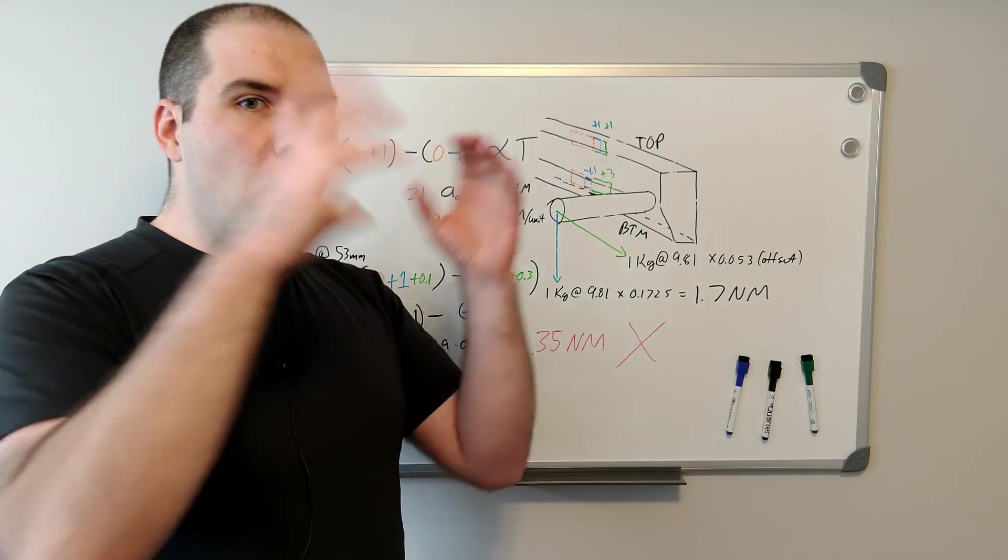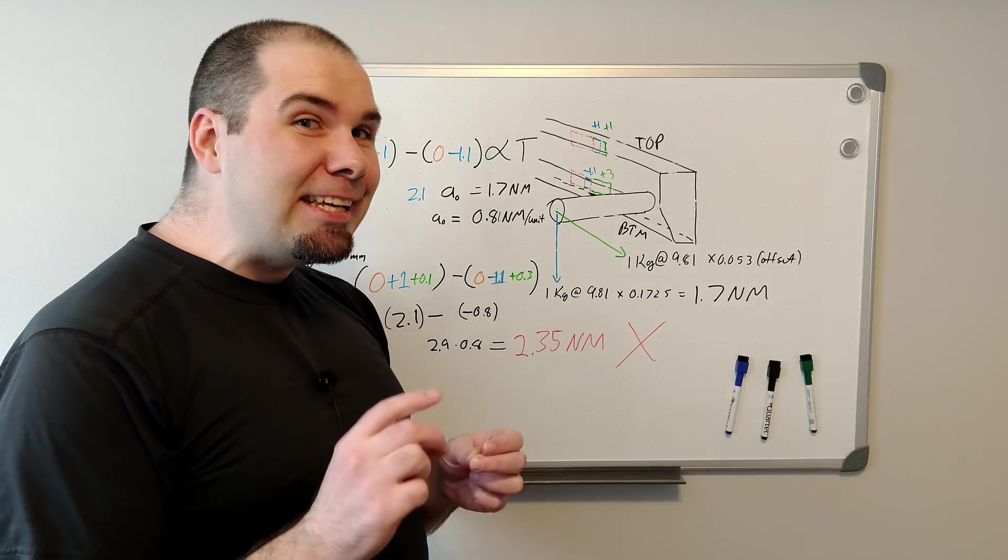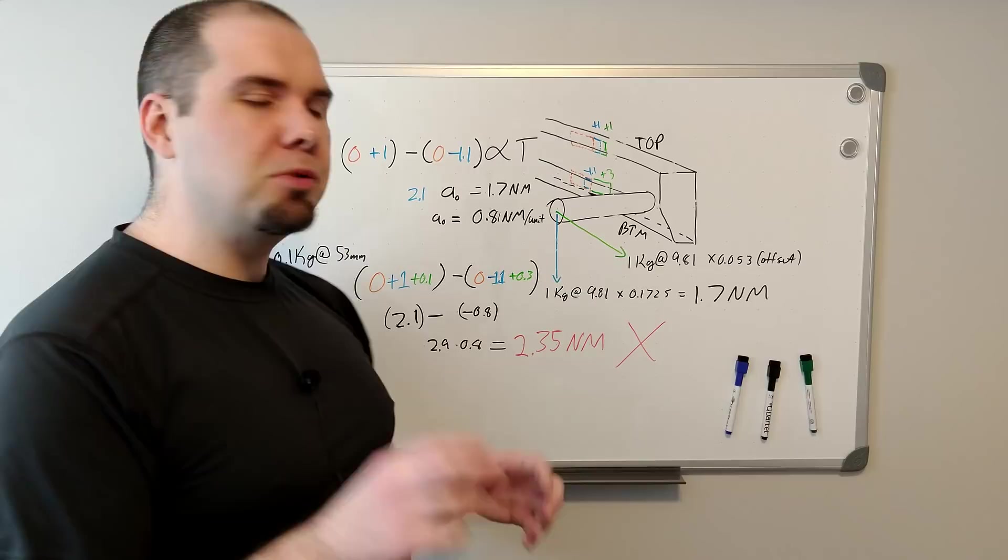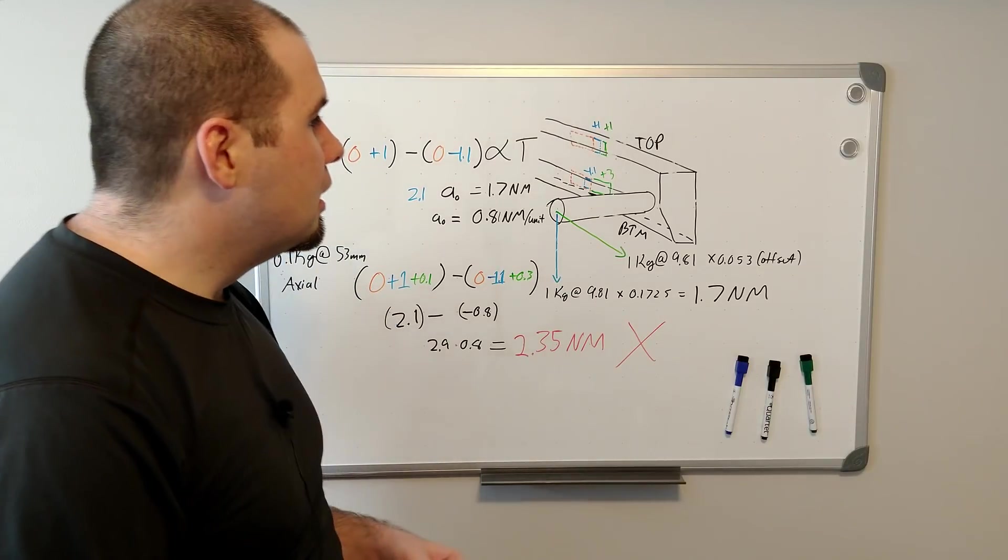But you only see the output from the whole bridge. You don't see, and you can't see in that arrangement, any individual output of a strain gauge.